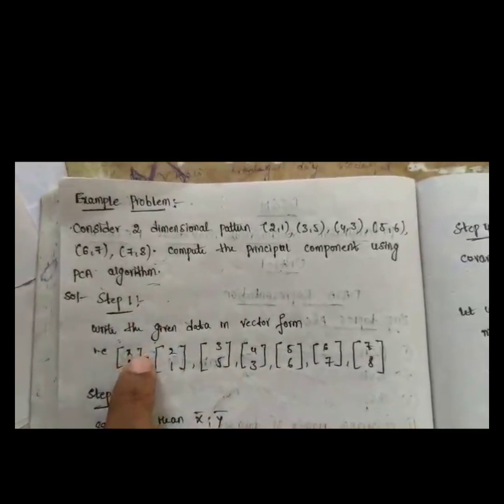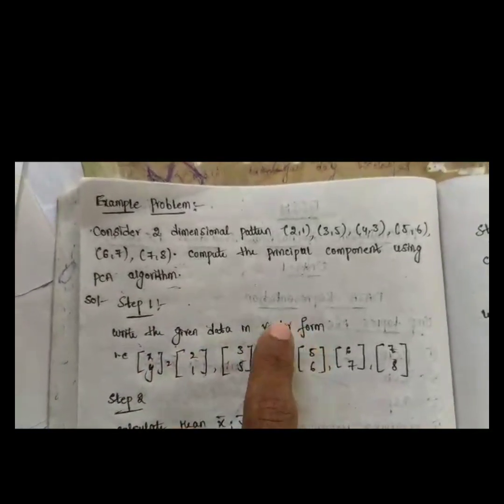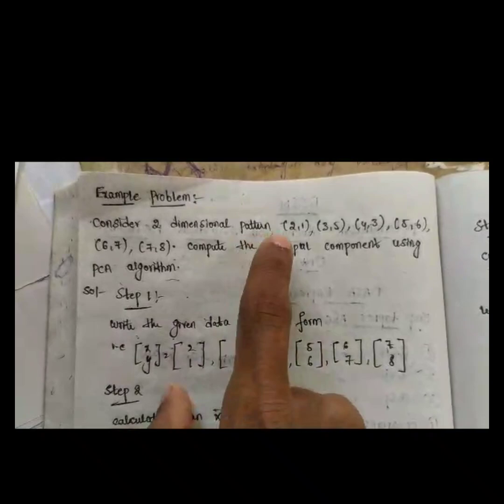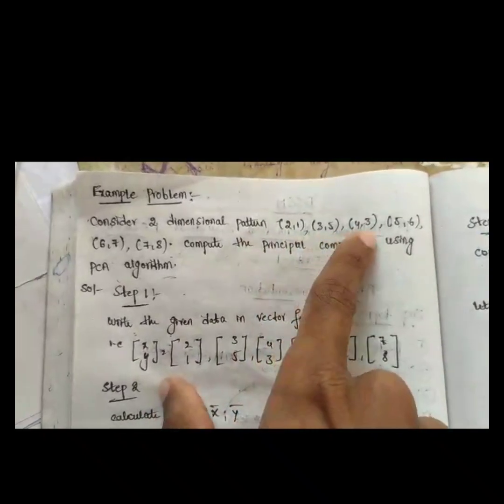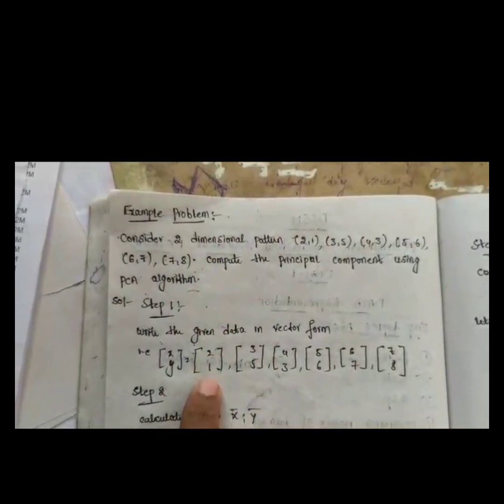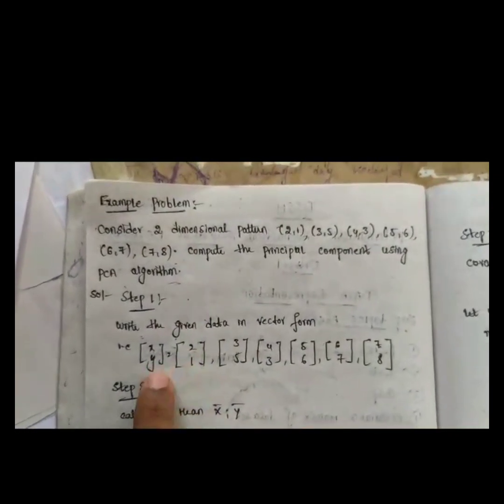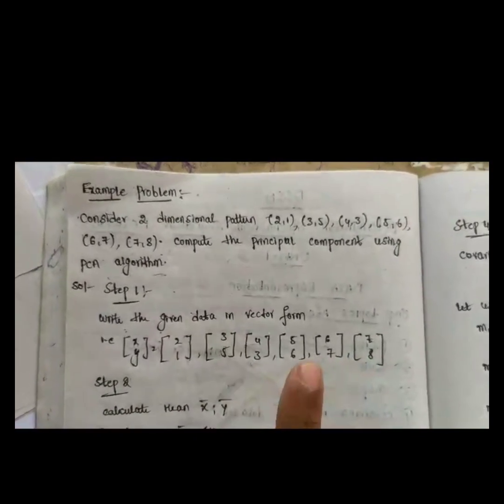We know that in the PCA algorithm we follow seven steps. The first step is to write the given data in vector form. We are writing the given data — (2,1), (3,5), (4,3), (5,6), (6,7), (7,8) — in vector form with columns x and y.